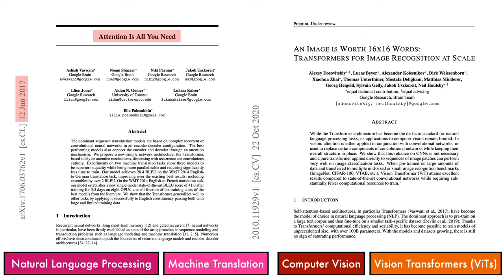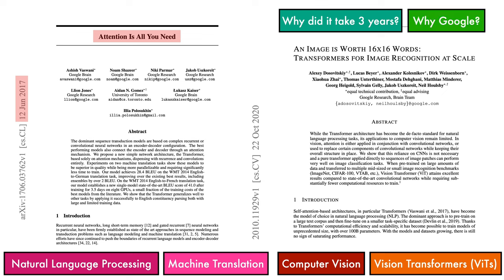If Transformers are so great, it's interesting to ask why it took three years to really make the jump from NLP to computer vision, which is quite a long time in the modern era. Second, why was it Google that demonstrated the benefits of Transformers for vision? We cannot know for sure, but by the end of this video, I hope it will become clear why the nature of Transformers made this more improbable than otherwise.